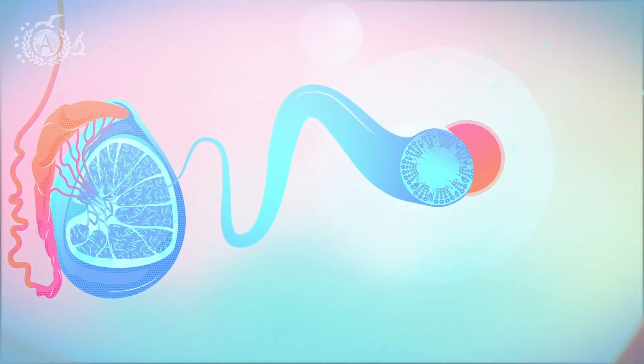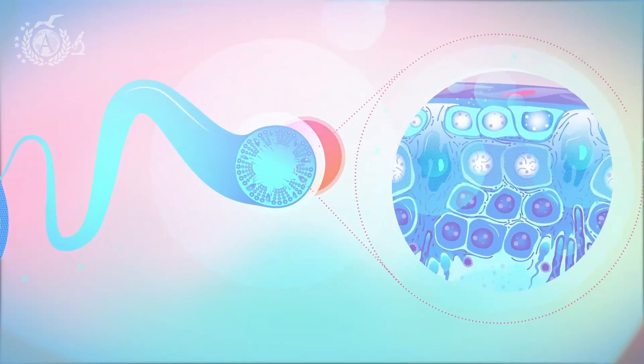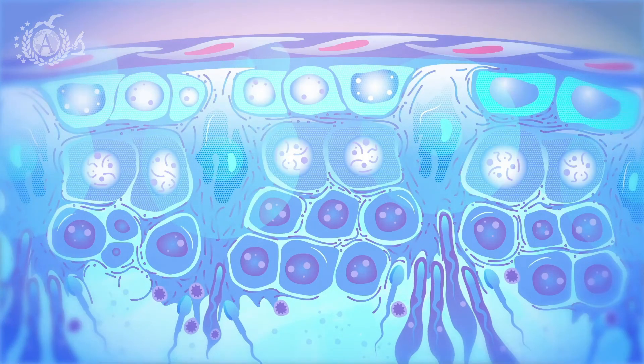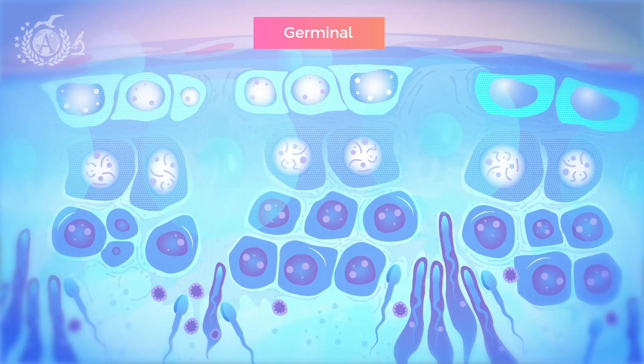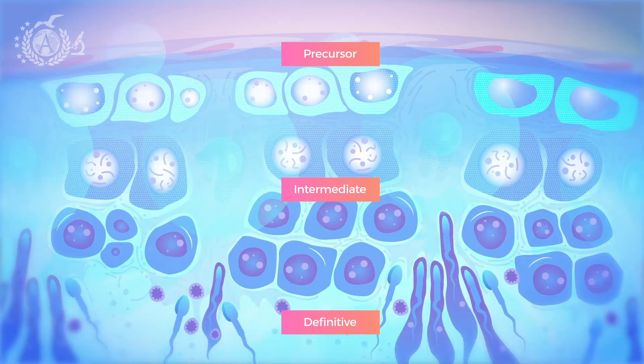After a macroscopic analysis of the testicle, we can focus on its microscopic structure. Let's get a magnifying glass. Let's go! There are two components of the seminiferous tubule, a germinal and a somatic one. The germinal component is represented by the sperm cells in their different stages of development,